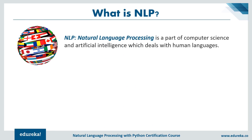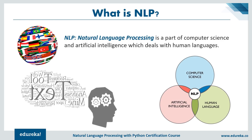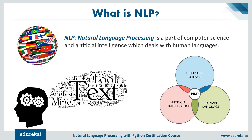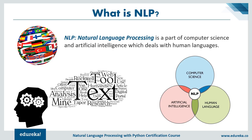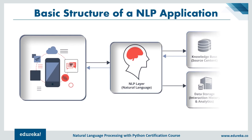NLP refers to the artificial intelligence method of communicating with an intelligent system using natural language. By utilizing NLP and its components, one can organize massive chunks of textual data, perform numerous automated tasks, and solve problems such as automatic summarization, machine translation, named entity recognition, speech recognition, and topic segmentation. In an NLP application like a chatbot, we have an NLP layer connected to a knowledge base containing chat logs and a data storage with interaction history and analytics, which help generate meaningful output.